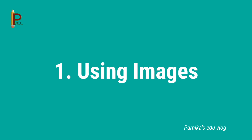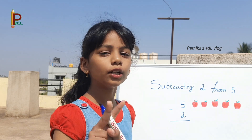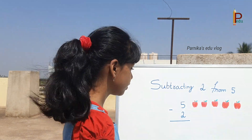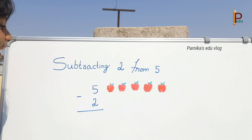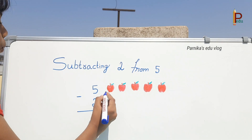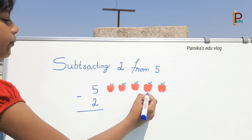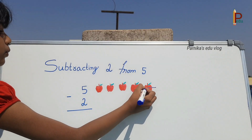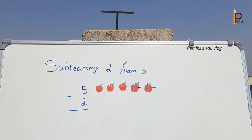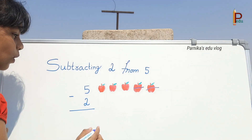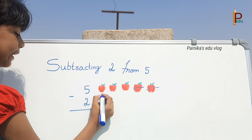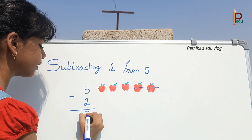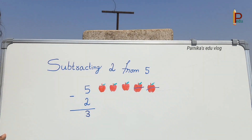Number 1: Subtraction using images. Subtracting 2 from 5 — write 5 minus 2. Here we have 5 apples: 1, 2, 3, 4, 5. We need to subtract 2 apples, so cross out 2. How many apples are left? 1, 2, 3. We write 3 here. So the answer is 3.